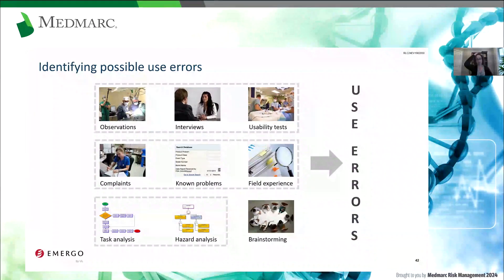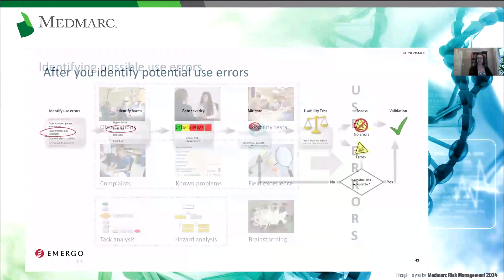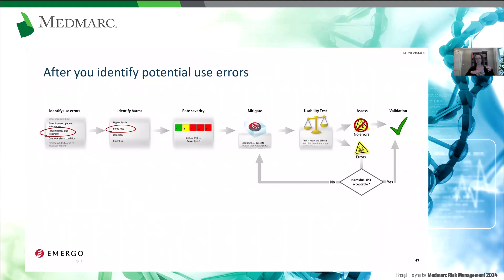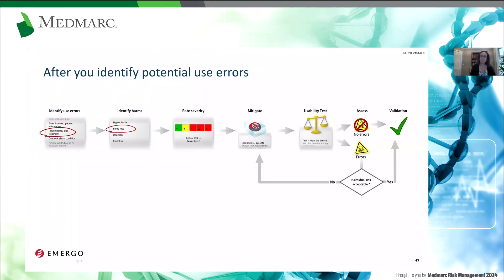You might have complaint data from post-market surveillance to reflect on, and getting together with a multidisciplinary team of individuals is also valuable for brainstorming. Basically, you're identifying errors, thinking about what harms can occur from each error, and writing the severity of harm. On a five-point scale, you might have: negligible, minor, serious, critical, and catastrophic. Then you decide — anything above a three or higher, for example, is what you're concerned about. Those items you definitely need to address. You look at how you can reduce the severity of those harms and/or the likelihood of those occurrences happening, and you build in some mitigations.